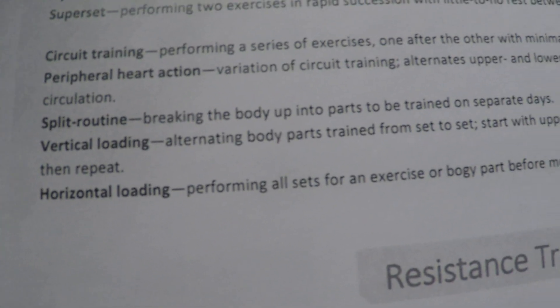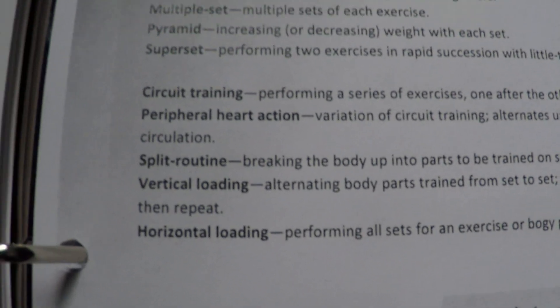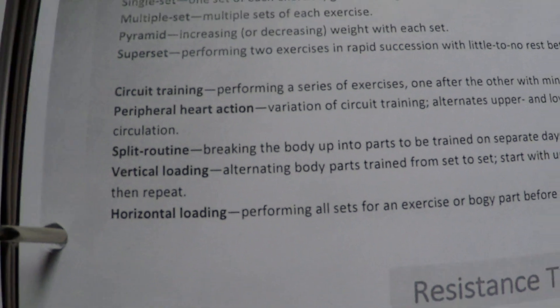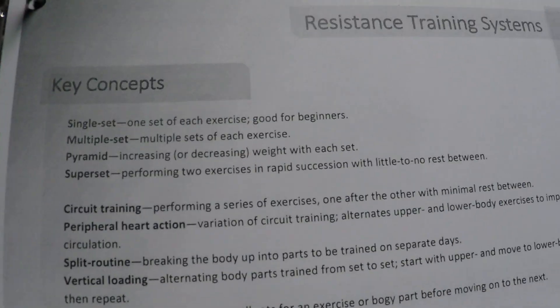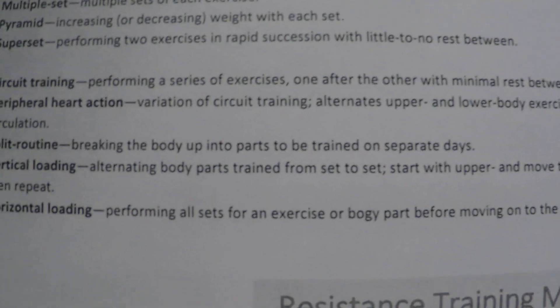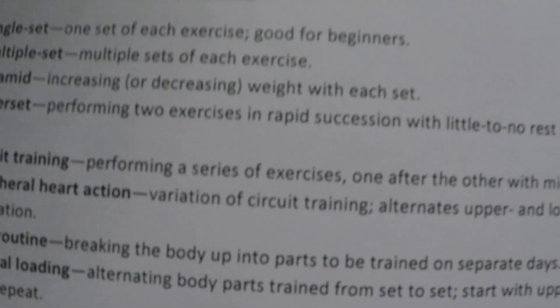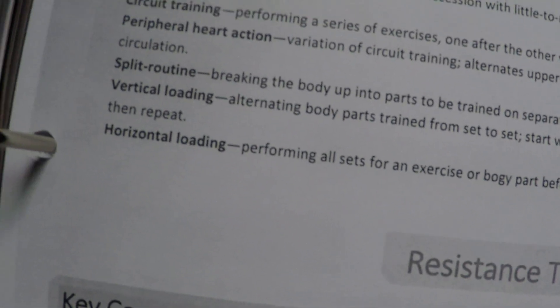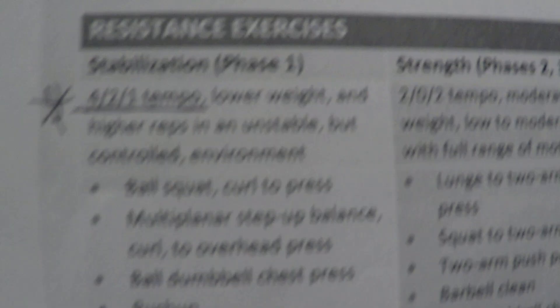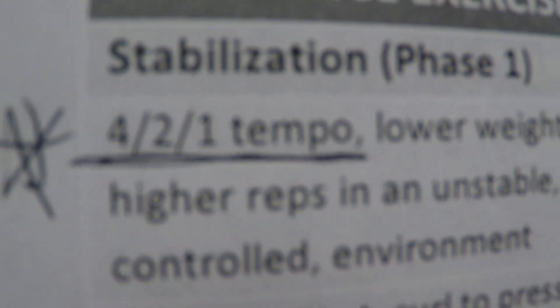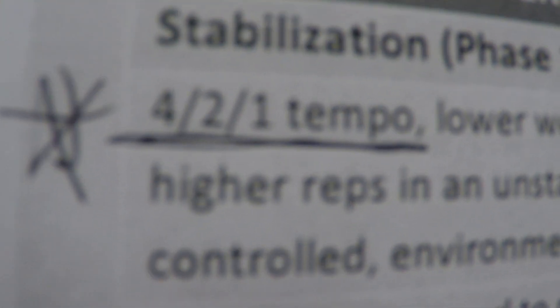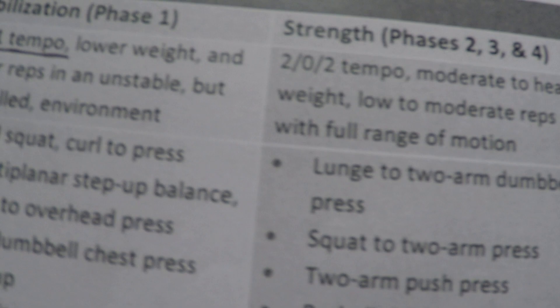There was a question about coronary heart disease - what should or shouldn't clients do. The book says something like don't let them lay down or sit down; most exercises you want them standing to keep circulation good. Resistance exercise stabilization tempo is 4-2-1 - that's a question on the test. The tempo for strength is 2-0-2, and then explosive tempo. But the one you need to know is 4-2-1 for stabilization.